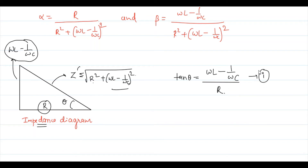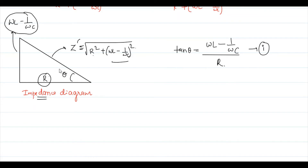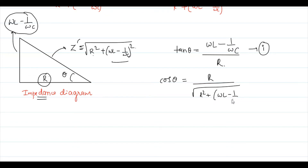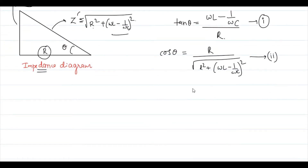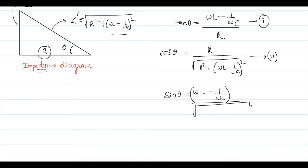From the same impedance diagram, we can also define cos θ = R / √[R² + (ωL − 1/ωC)²] — equation (2) — and sin θ = (ωL − 1/ωC) / √[R² + (ωL − 1/ωC)²] — equation (3). These trigonometric relations come from the impedance triangle.